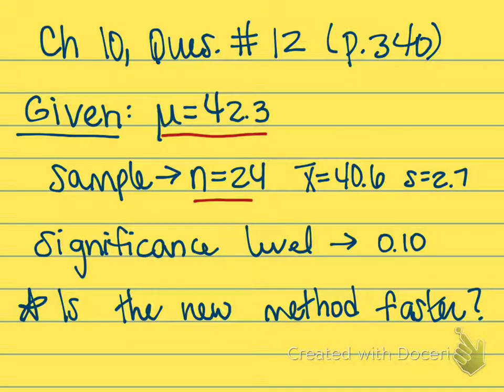The mean assembly time for a random sample of 24 carts using a new method was 40.6 minutes, and the sample had a standard deviation of 2.7 minutes. Using a significance level of 0.10, can we conclude that the assembly time using the new method is faster?